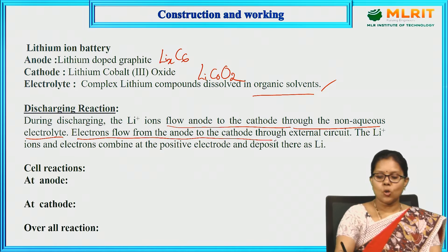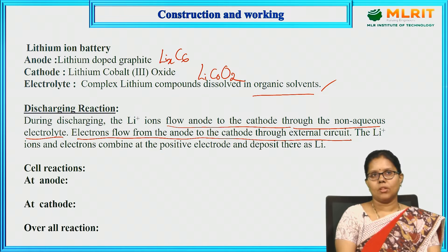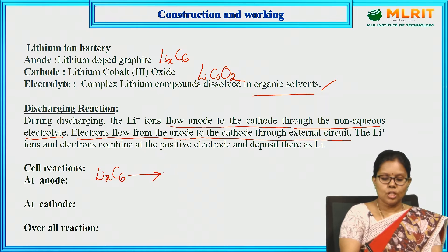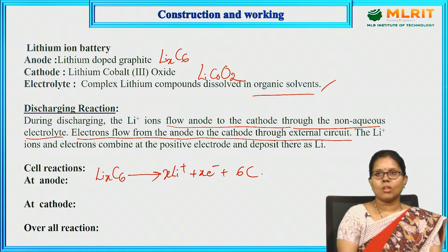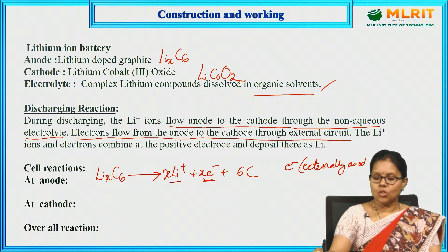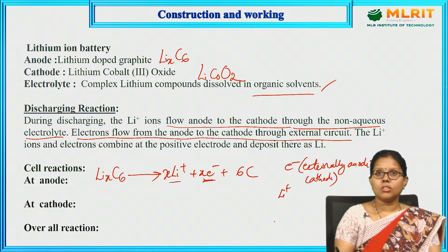Electrons move from anode to cathode through the external circuit. So lithium ions move internally and electrons move externally. At the anode, oxidation takes place during discharging: LixC6 gives x lithium ions, x electrons, and 6 carbons. The generated ions and electrons then travel — electrons externally and lithium ions internally — from anode to cathode.